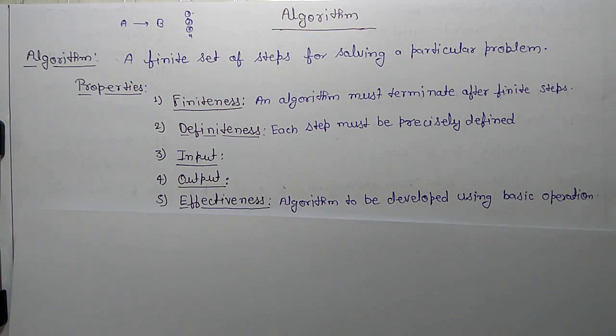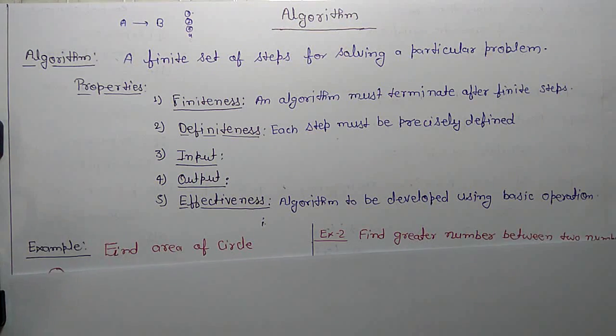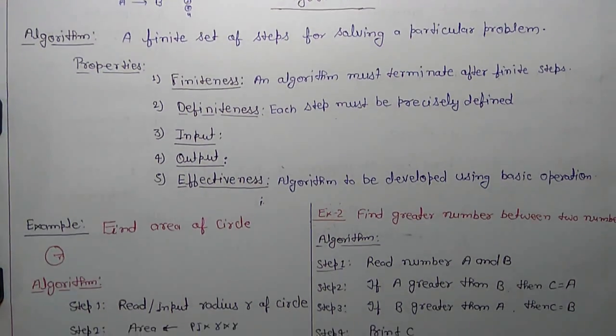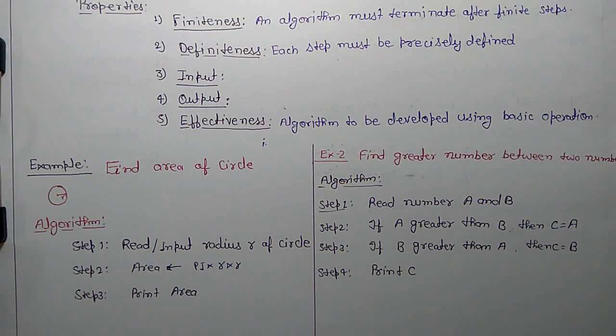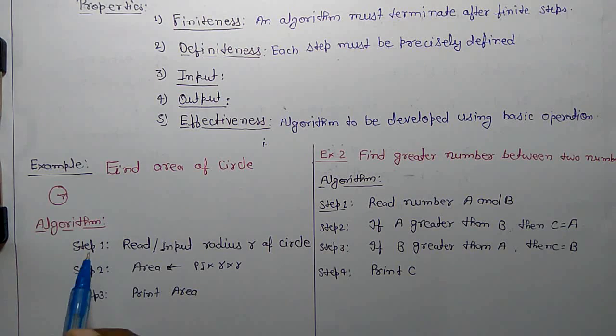So let's create algorithm for these two problems: find area of circle and find greater number between two numbers. For finding area of circle, you require a radius value. Algorithm: first step, read or input radius r of circle.